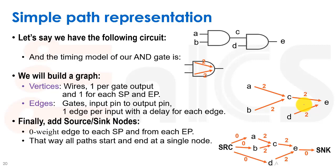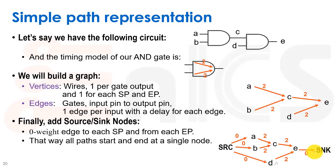We add a source node and a sink node — a primary input and primary output — so we can handle all paths in one sweep. The delay from the source to all primary inputs is zero, and the delay from outputs to the sink is zero. This lets us deal with everything in one shot.